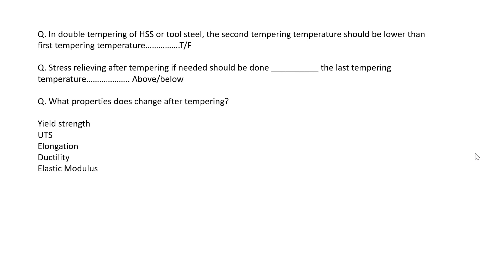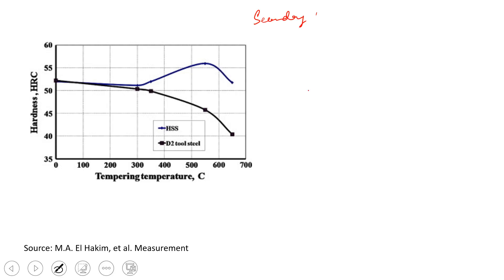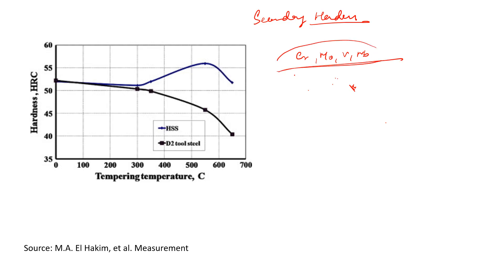Welcome to the channel. Let's look at some questions, but first a brief about secondary hardening. Secondary hardening is seen in alloyed steels, mainly those containing chromium, molybdenum, vanadium, and niobium — molybdenum being the major element. These elements are strong carbide formers.